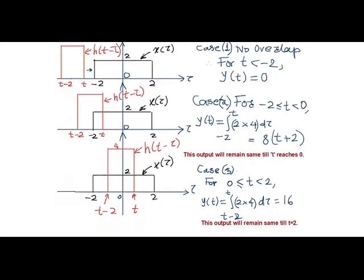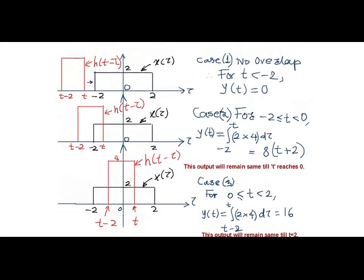For the first case, both x of tau which is fixed and h of t minus tau as they do not overlap for the time interval t less than minus 2. Thus the output remains 0.